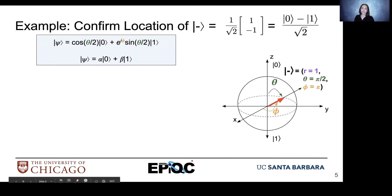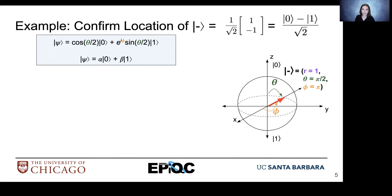In this example, let's confirm the location of ket-minus, which is the result of taking ket1 and evolving it with the Hadamard operation, so that we're at the back of the Bloch sphere in a 50-50 superposition of zero and one with a phase aspect. We see that phase — that minus sign — on the ket1 part of our qubit state. We have this first representation of qubit state, but now we're going to confirm the location using our new representation.